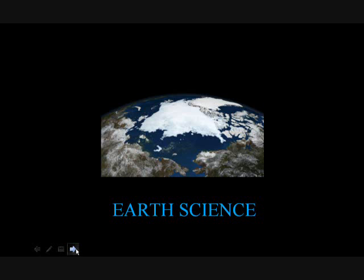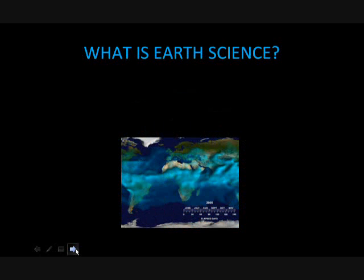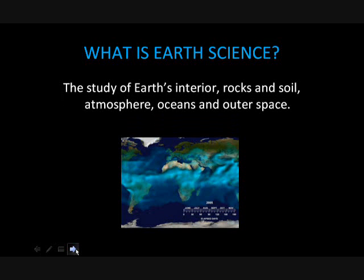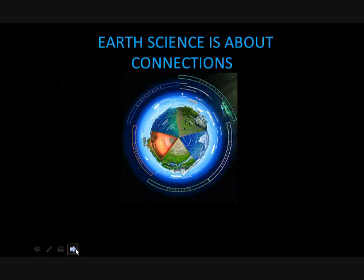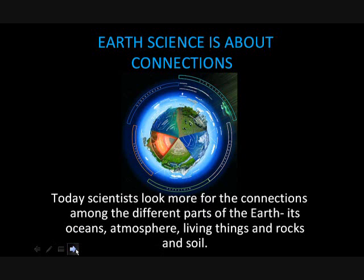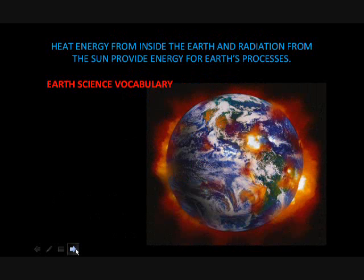Earth science — what is earth science? It is the study of earth's interior, rocks and soil, atmosphere, oceans, and outer space. Earth science is about connections. Today scientists look more for the connections among the different parts of the earth: its oceans, atmosphere, living things, and rocks and soil.